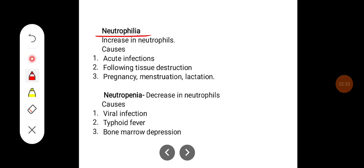Neutrophilia is where there is increase in the neutrophil count. Some important causes are acute infections, particularly bacterial infection, following tissue destruction, pregnancy, menstruation and lactation. Neutropenia is a decrease in the neutrophil count. Some causes are viral infection, typhoid fever and bone marrow depression.